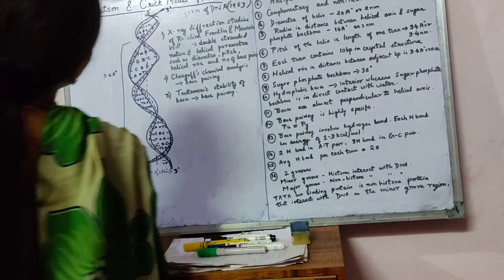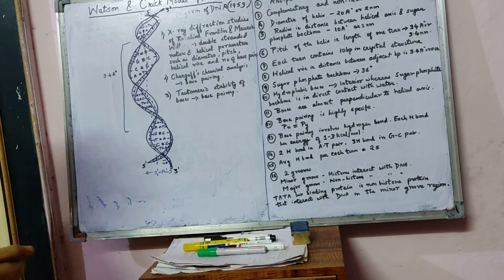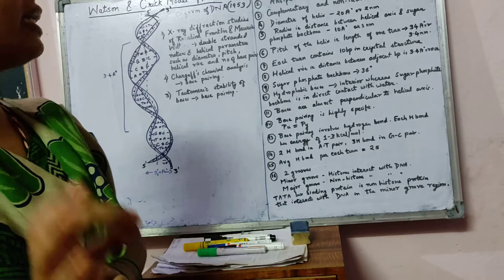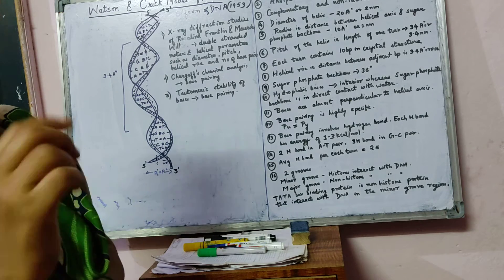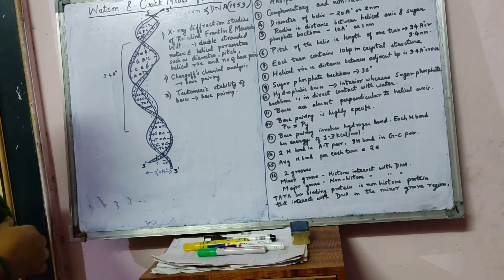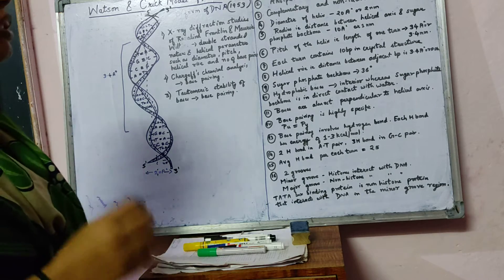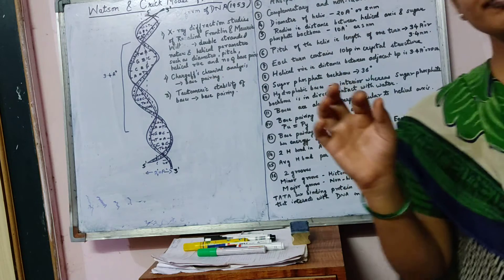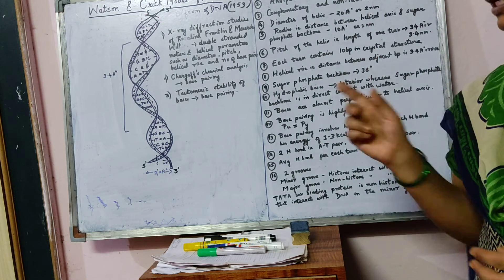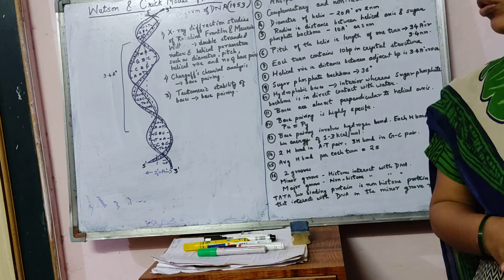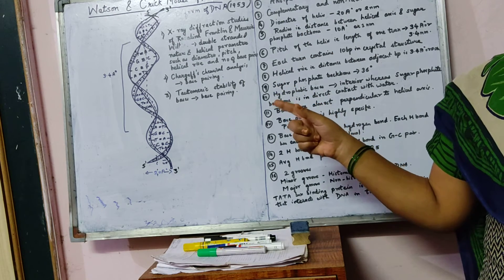We'll start with our next topic: the Watson and Crick model of DNA, also called the double helix model. This is the most accepted model, which proposes the secondary structure of DNA and for which they received the Nobel Prize in 1953.